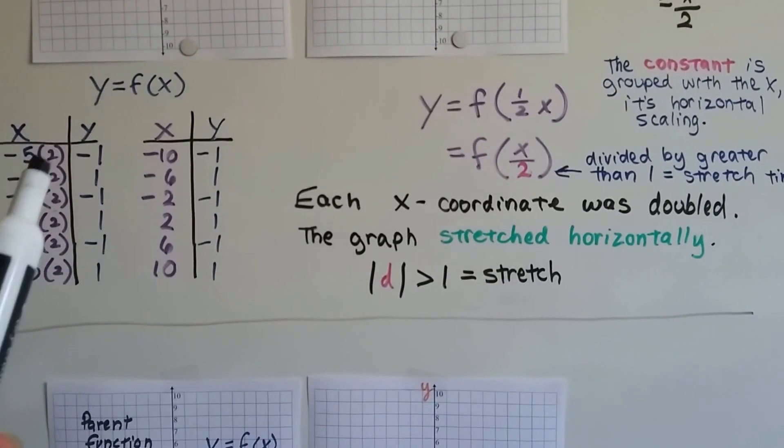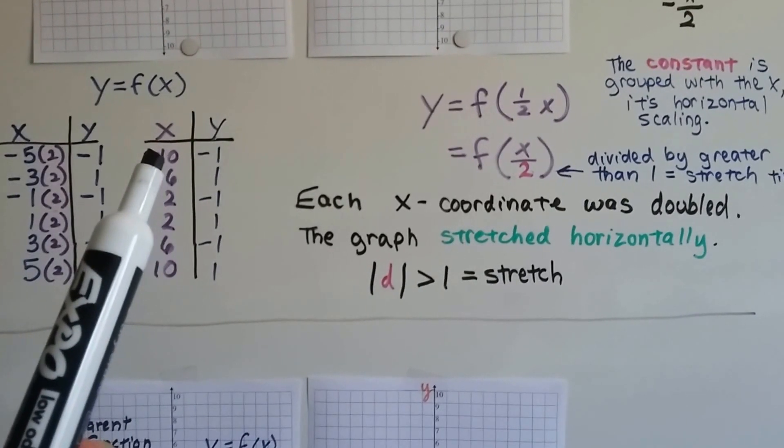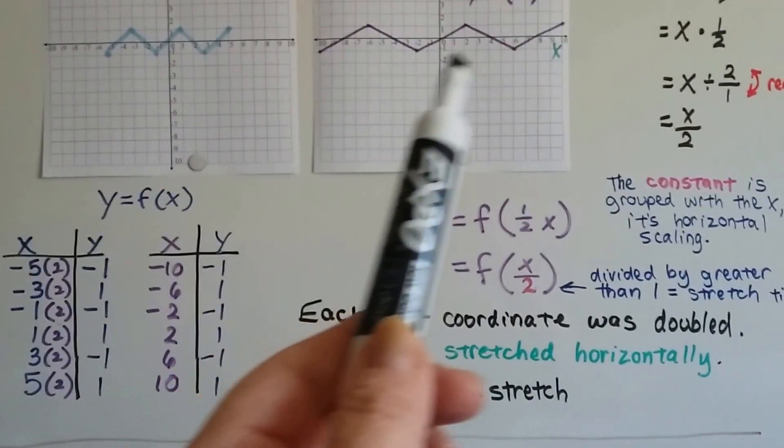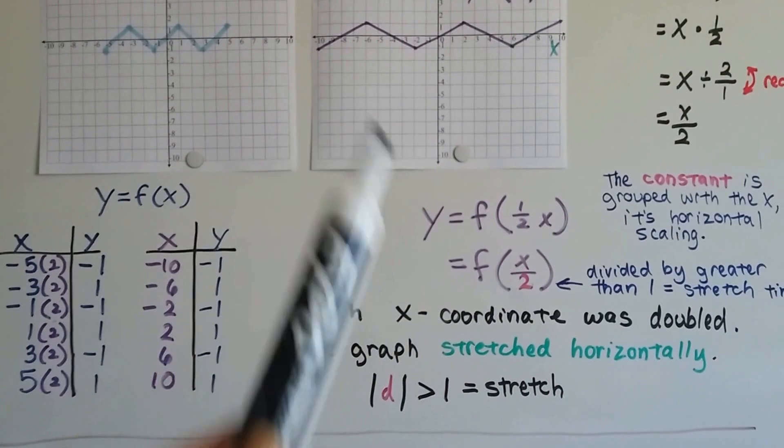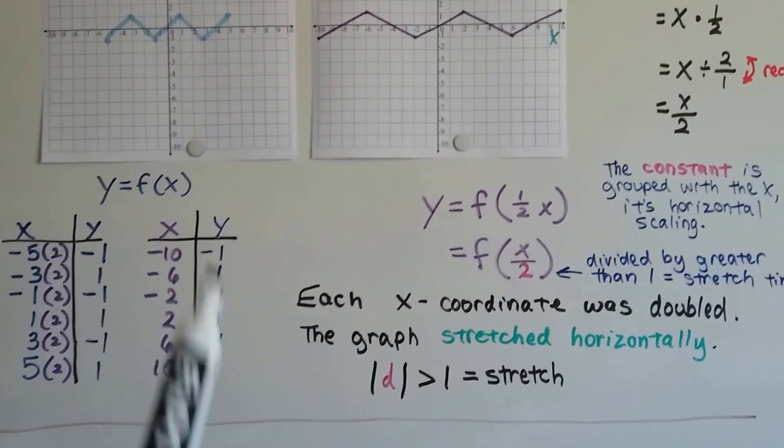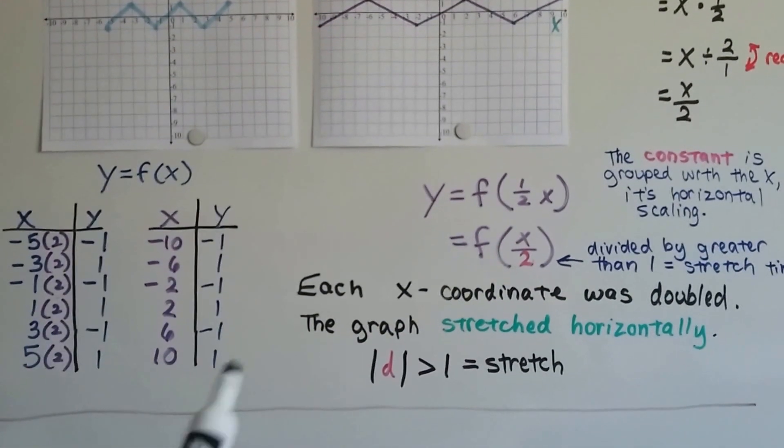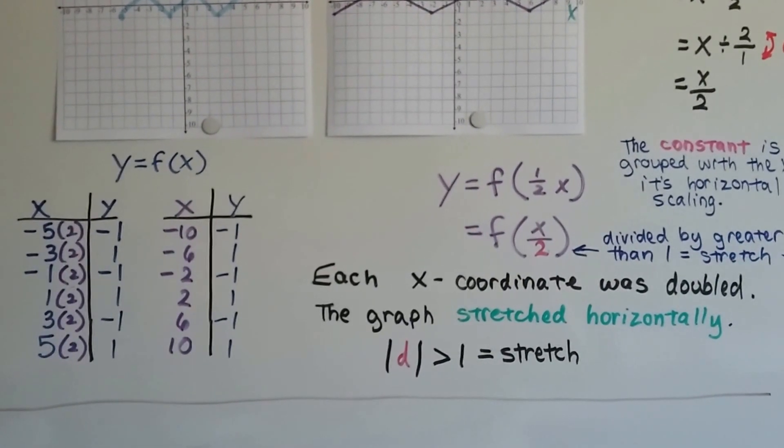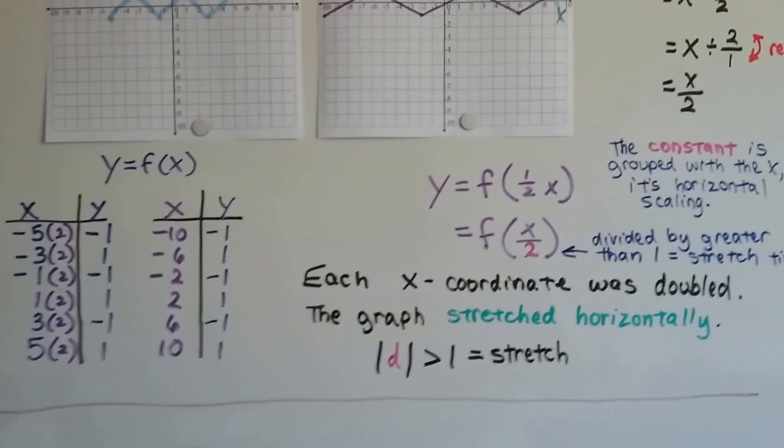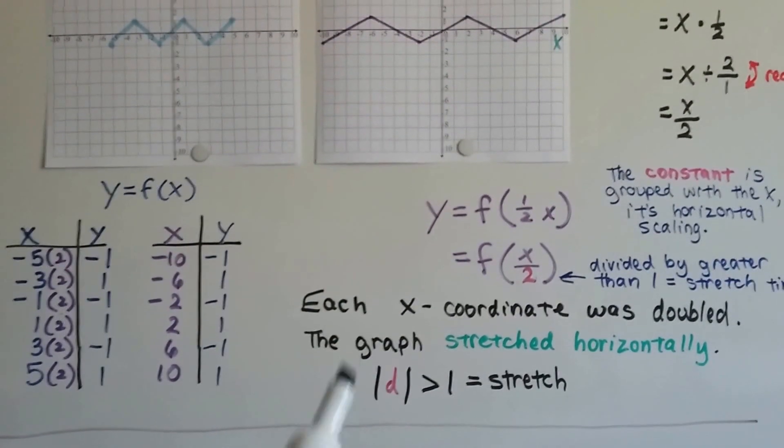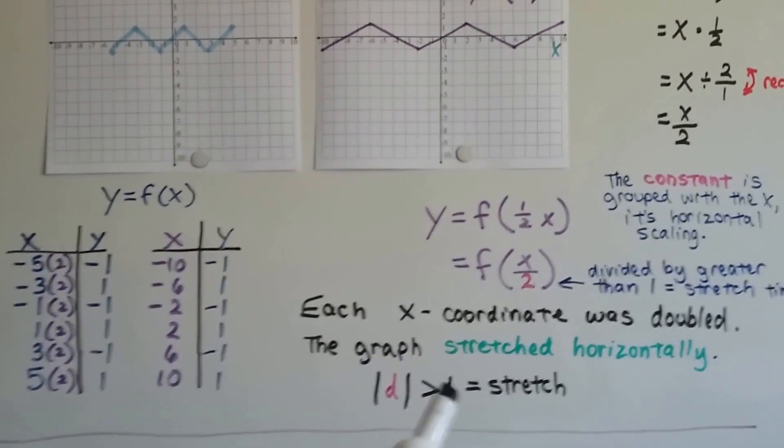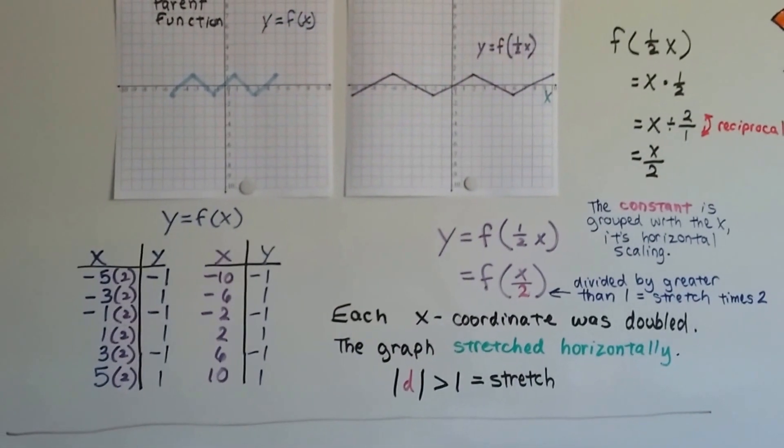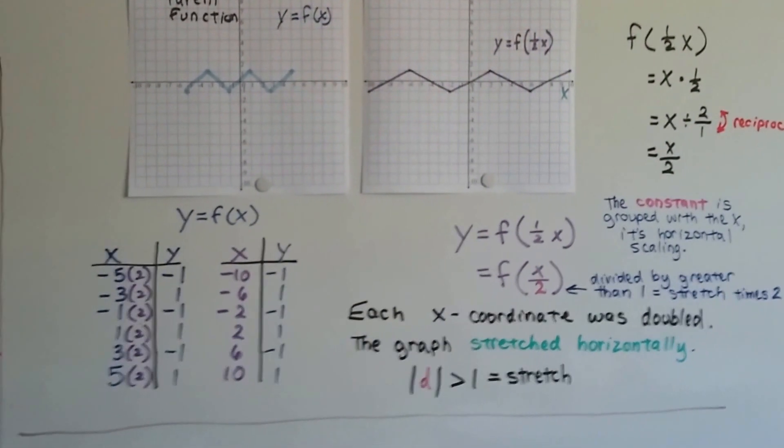So the negative 5 times 2 becomes a negative 10. The negative 3 times 2 becomes a negative 6. And our graph is being stretched. And we can graph it using these values. See how the y stayed the same, but the x changed? Each x coordinate was doubled, and the graph stretched horizontally. The absolute value of d was greater than 1, so it stretched. Let me step back a little bit for you. See how that happened?